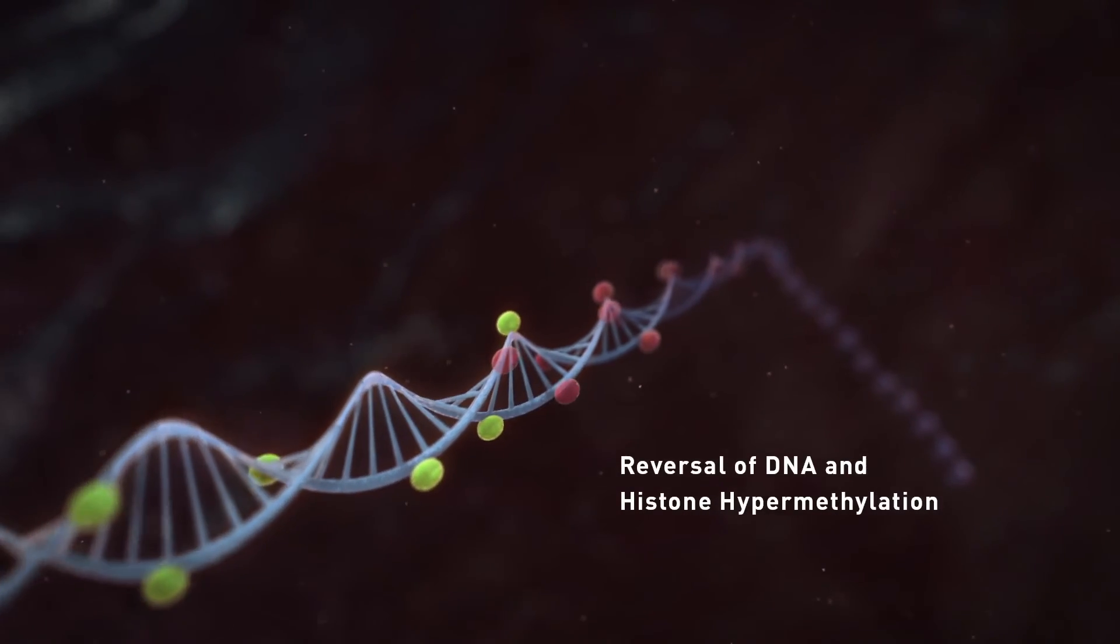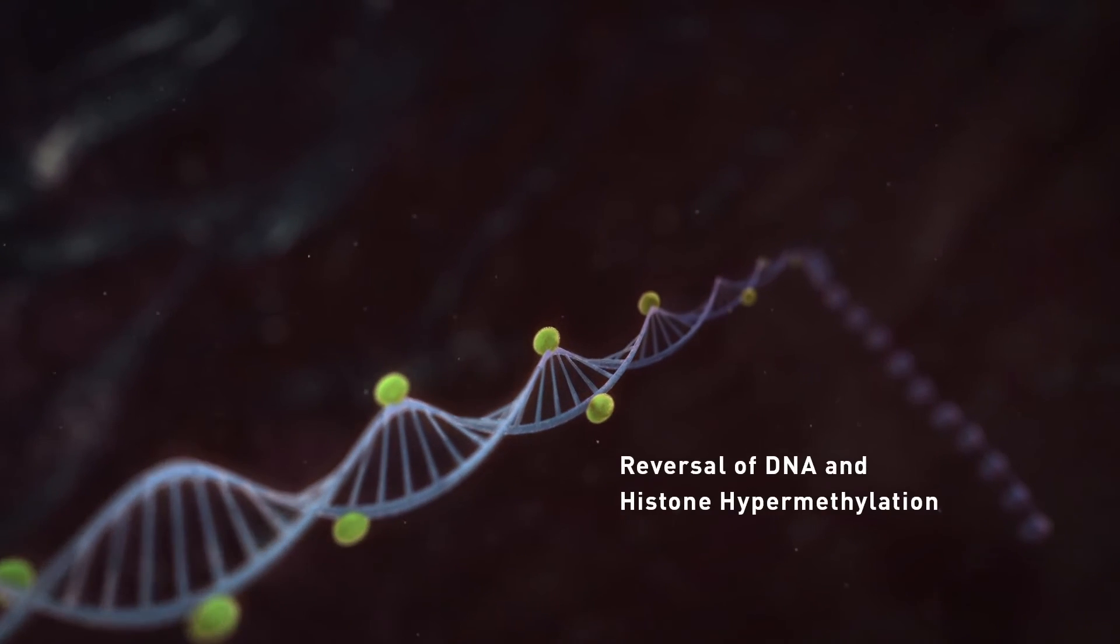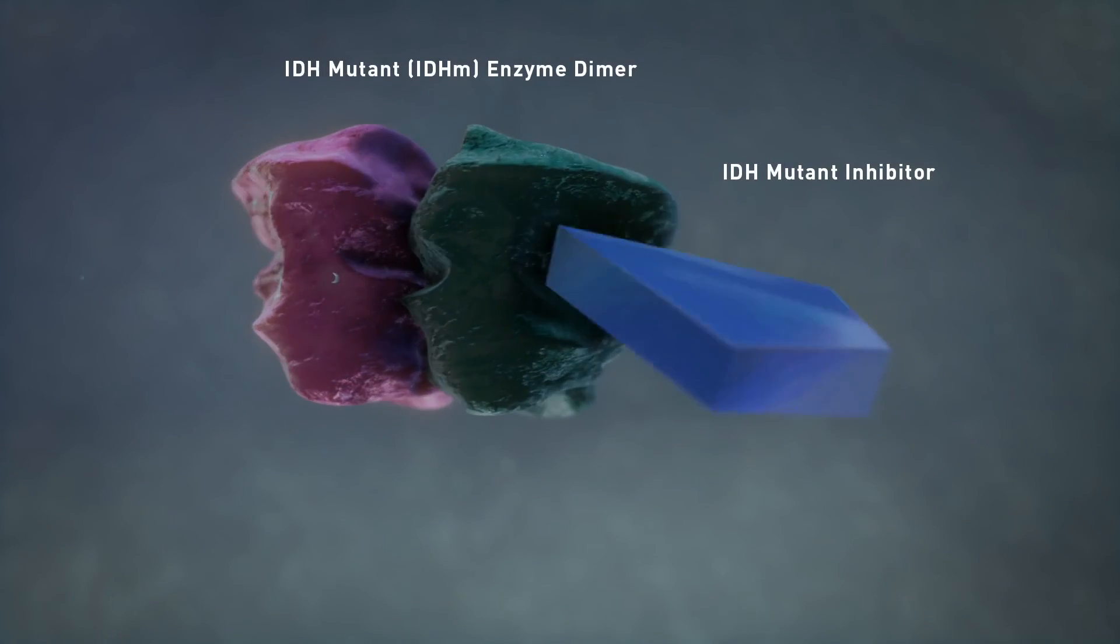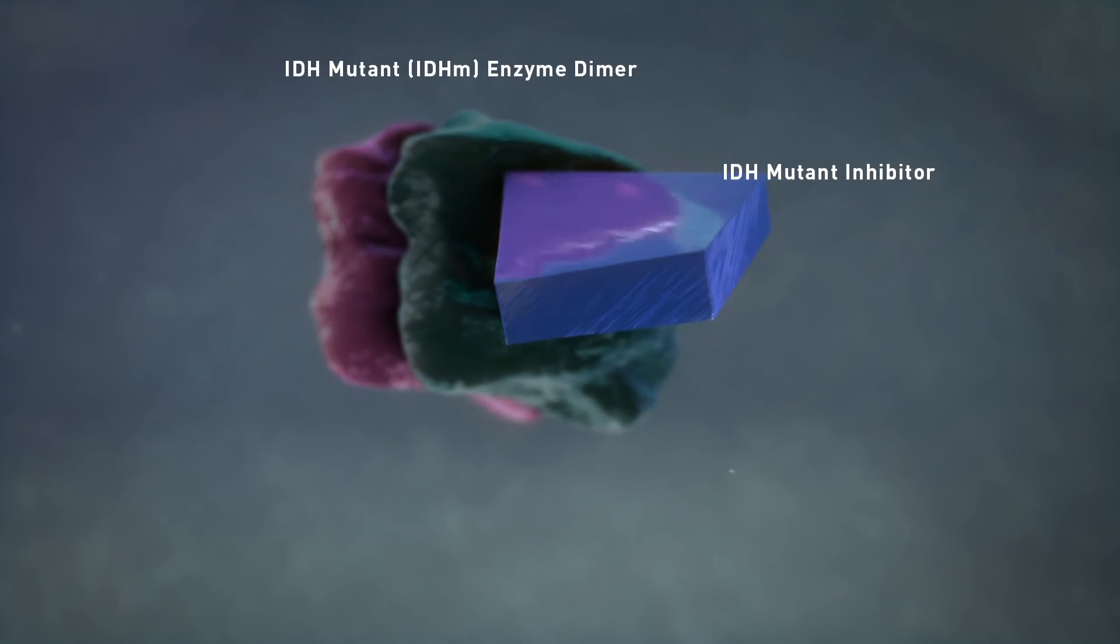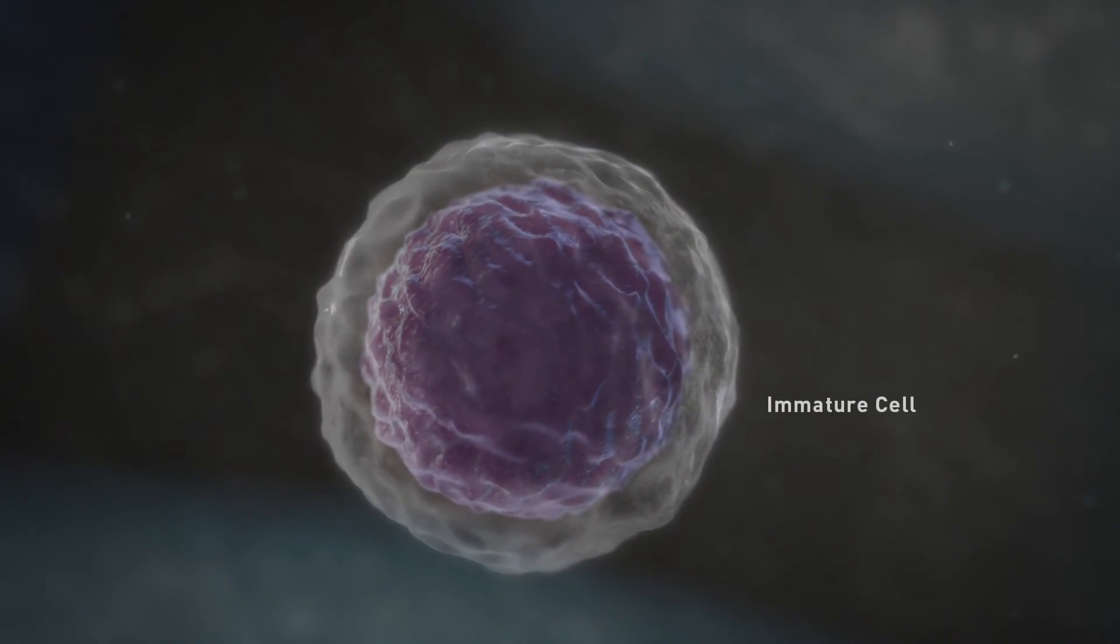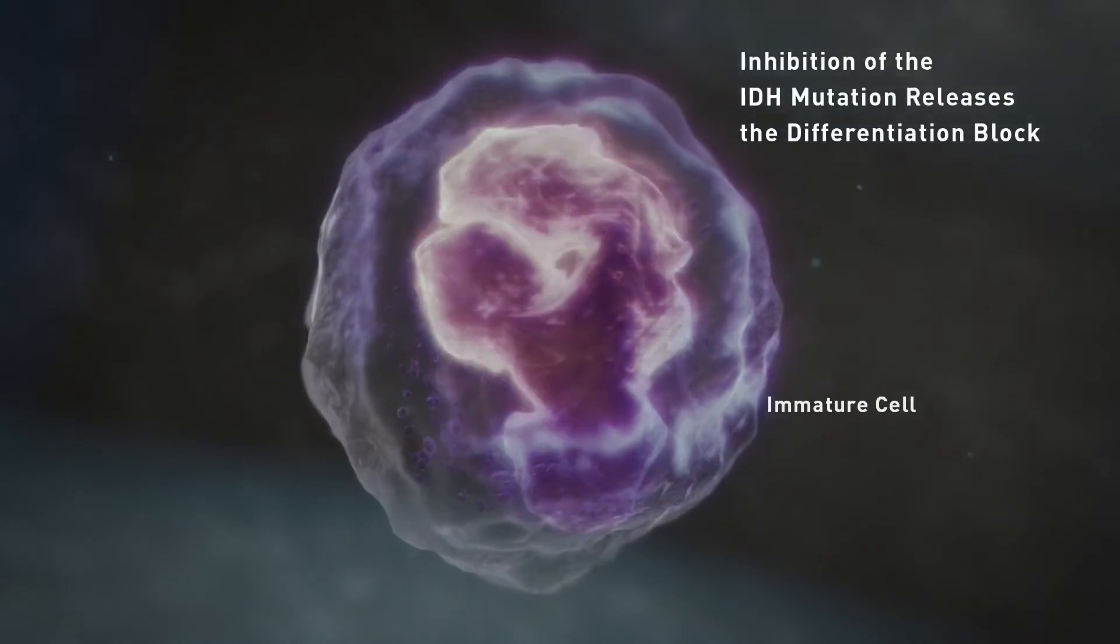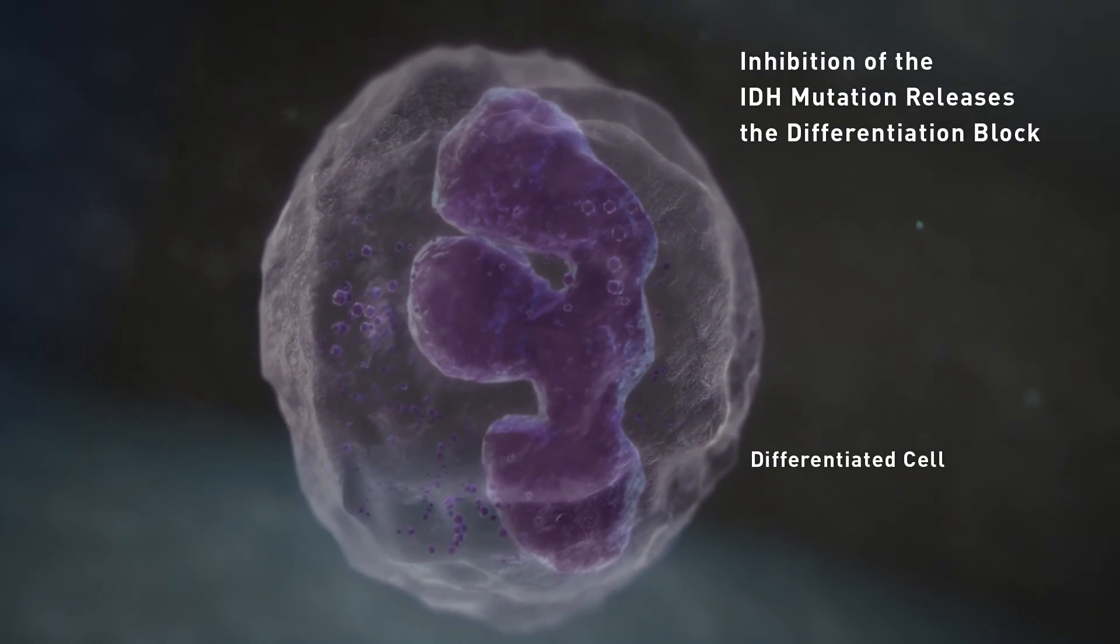This allows expression of genes that are involved in cellular differentiation. Pre-clinical studies suggest that inhibition of IDH mutation releases the differentiation block, which may allow immature cells to differentiate, rather than persist and grow as a tumor.